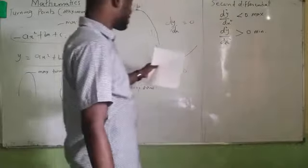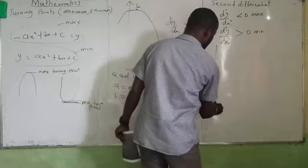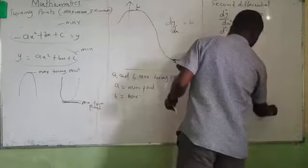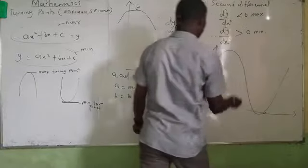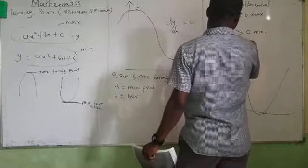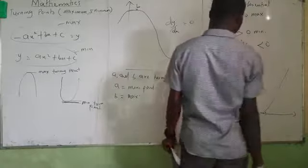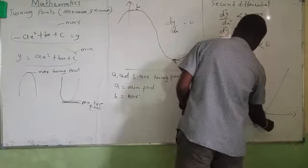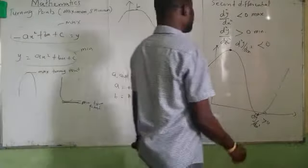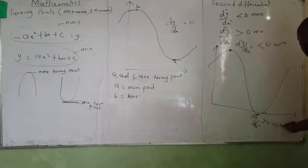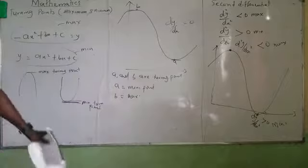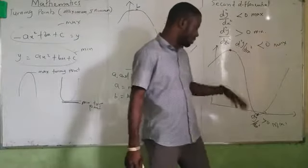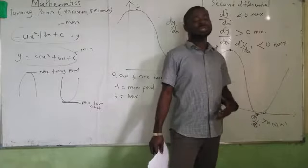Take note of that very well. At a maximum point, d²Y/dX² is less than 0. At a minimum point, d²Y/dX² is greater than 0. So: when you differentiate the second time and the value is less than 0, it is a maximum; and when you differentiate the second time and the value is greater than 0, it is a minimum.